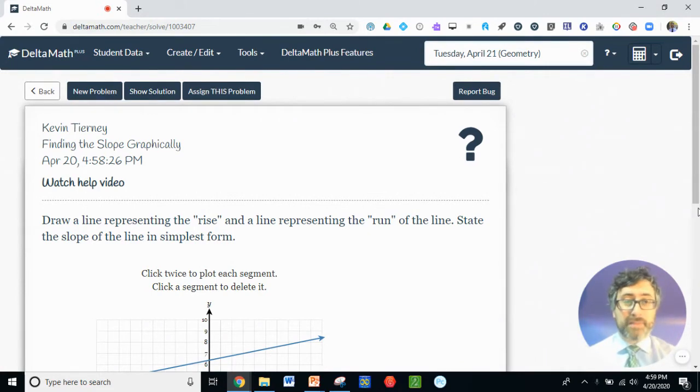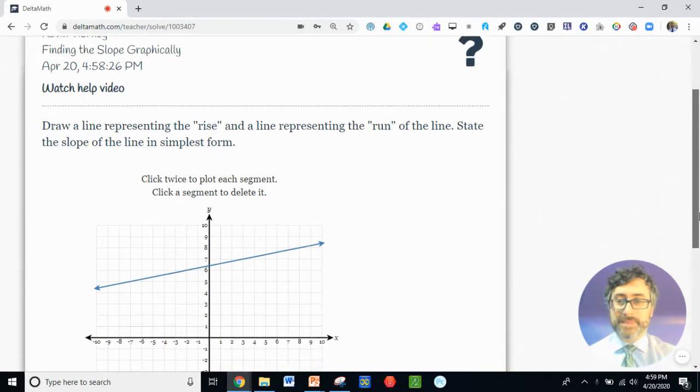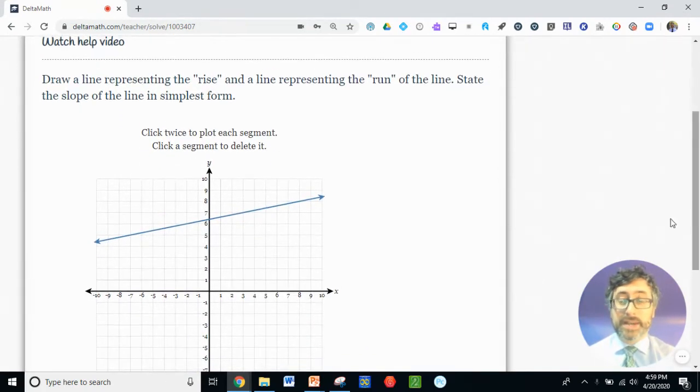Let's take a look at the first problem. Now our goal is to find the slope of this line in blue, and I'm told that we should draw a line representing the rise and a line representing the run of the line. State the slope of the line in simplest form. First click twice to plot each segment, and if I need to, click a segment to delete it. So I'm going to need to find a rise and a run.